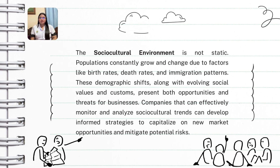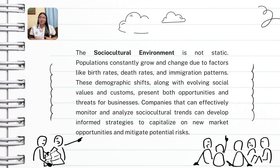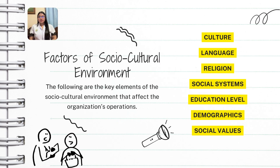Closely linked to social-cultural factors is the concept of demographics. Demographics refer to the composition of a population, including characteristics such as gender, age, ethnicity, race, language, education level, occupation, income, family size, and religion. By understanding both demographics and the social-cultural environment — often used interchangeably as social-demographic factors — businesses gain valuable insights into customer behavior. There are seven factors of the social-cultural environment: culture, language, religion, social systems, education level, demographics, and social values.